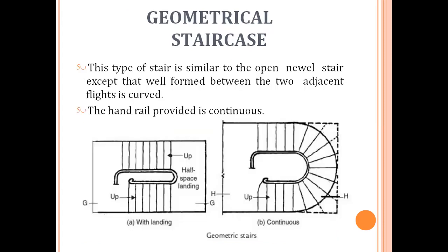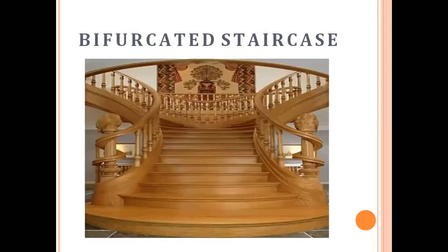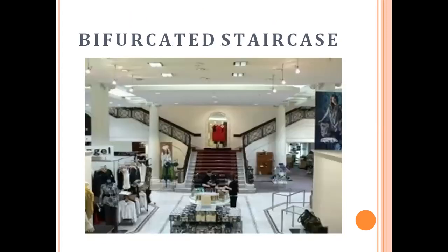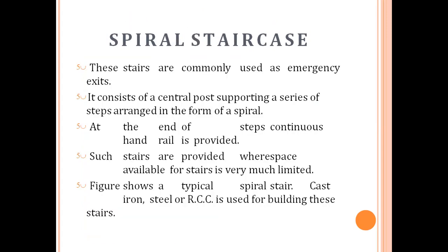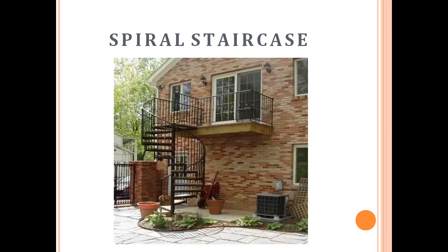Geometrical stairs are those in which a geometrical shape is given to the open well. The bifurcated stair bifurcates users in two different directions. Spiral stairs are generally made up of steel or timber and are generally provided outside houses or inside shops.